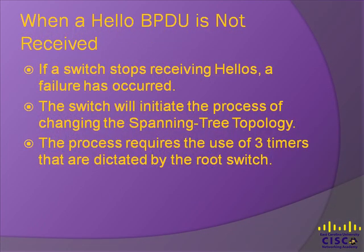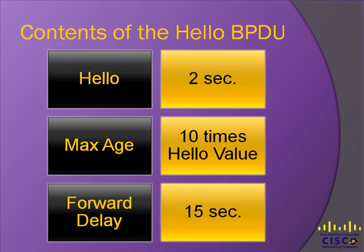If a switch stops receiving the hellos, a failure has occurred, which results in the switches initiating the process of changing the spanning tree topology. This process requires the use of three timers dictated by the root switch. The hello timer is the period between hellos created by the host. The max age timer is how long any given switch should wait after not hearing hellos before trying to change the topology. The forward delay is the delay affecting the process that occurs when an interface changes from blocking to forwarding state. A port stays in a temporary listening state and later a temporary learning state based on the time in seconds declared in the forward delay timer.